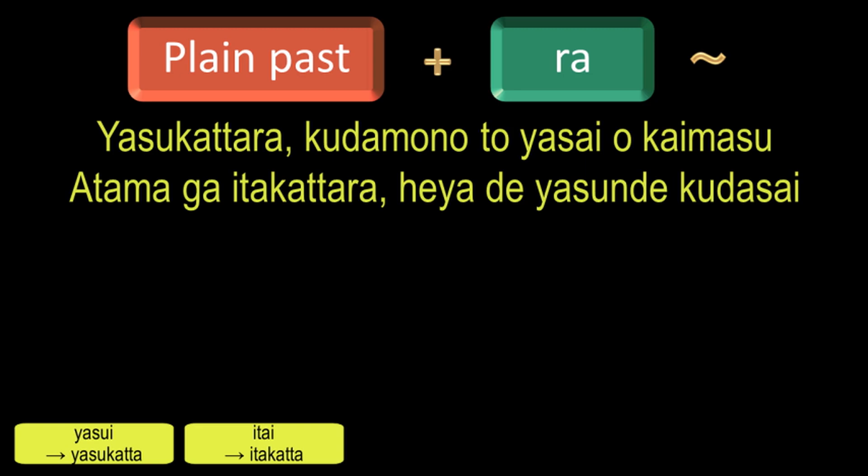Ii or Yoi means good or fine, and its plain past form is Yokatta. By adding Ra, we will get the condition Yokattara, which means if something is good or if something is fine.